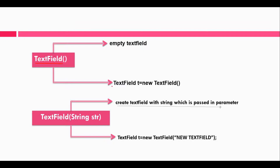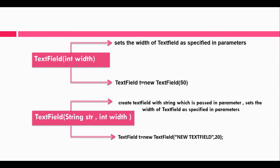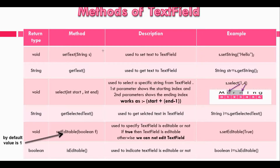The second constructor creates a TextField with a string passed as a parameter, and is used like this. The third constructor takes one integer parameter which specifies the width of the TextField, and can be used like this. The fourth constructor takes one String and one integer parameter — the TextField is created with an initial string passed as parameter, and the second parameter specifies the width of the text box, and can be used like this.